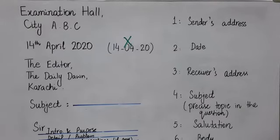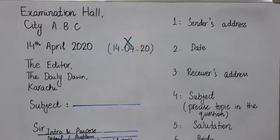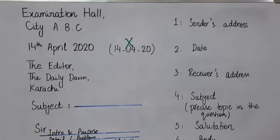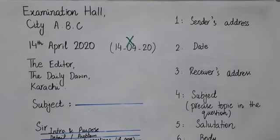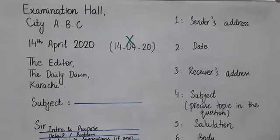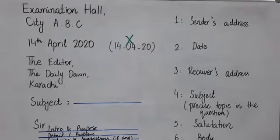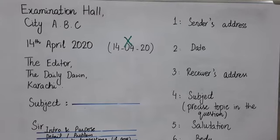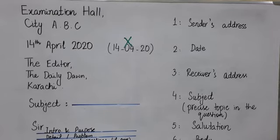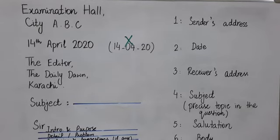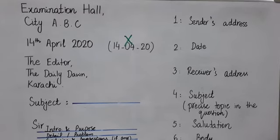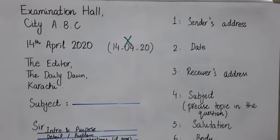There are basically seven parts of a letter. The first part is the sender's address. The sender is the person writing the letter — for example, if I am writing the letter, I am the sender; if you are writing the letter, you are the sender. As we know, we are not supposed to disclose our identity in our examination, so instead of writing our name, address, or contact number, we use 'Examination Hall, City ABC' as the sender's address.